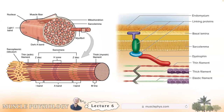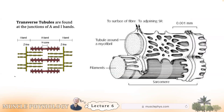Before traveling down a T-tubule, let's orient ourselves. The motor end plate is just a specialized part of the sarcolemma, which is the muscle's plasma membrane. The endomysium is more superficial; the sarcolemma is beneath it. Dystrophin links actin to support proteins, so muscular dystrophy involves a deficiency of dystrophin. The T-tubules are located at the junctions of the I and A bands — right where myosin ends — and that is where electrical signals enter the muscle.